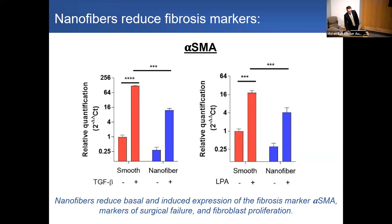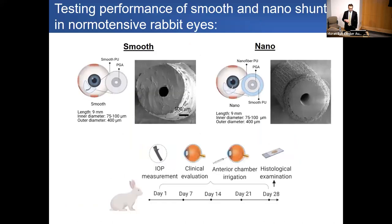The key hypothesis was that nanofiber surfaces would improve in vivo antifibrotic activity. We fabricated two shunts: one PCS with a smooth exterior, another with an outer nanofiber exterior surrounding an inner impermeable layer excluding cells from the inner lumen. These were implanted in rabbit eyes, with serial IOP measured, clinical exams performed to assess bleb morphology, shunt patency verified by anterior chamber fluorescein irrigation, and histologic exams performed.